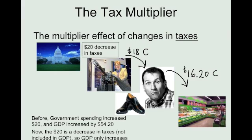When you did the spending multiplier, government spending is included in GDP. But here the government didn't do any spending, so the $20 cut in taxes can't be counted in GDP. And so the change in GDP that will result from a cut in taxes of $20 is going to be a smaller change in GDP than if they had spent $20, because that initial $20 of spending is counted in GDP.